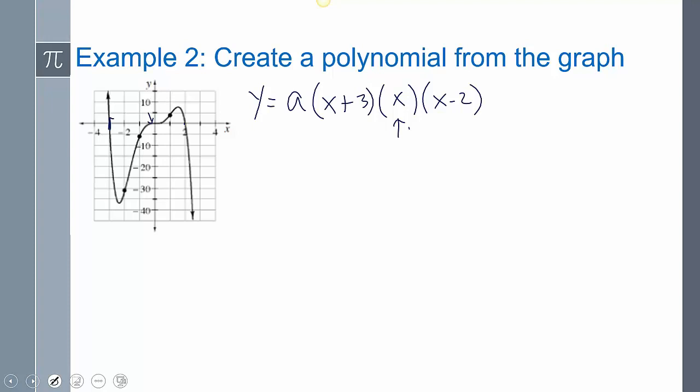So now I need to find my A. To do that, I'm going to plug in a point. So I guess this one looks easiest. I know it looks a little off, it's not supposed to be, but that looks like that's one five. So let's plug in one five. Five equals A times one plus three times one times one minus two. And so I get five equals A four times one times negative one. And I get five equals A times negative four. Divide both sides by negative four.